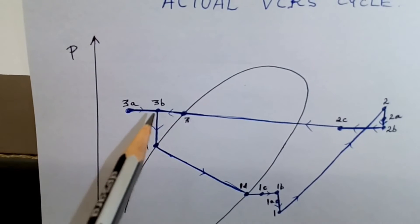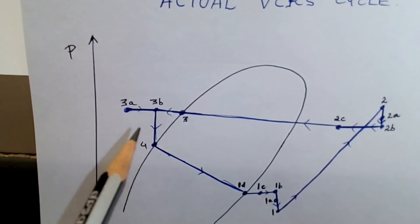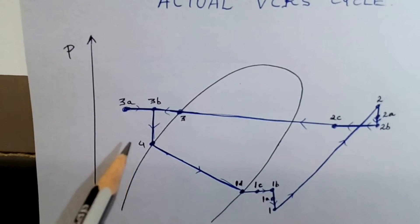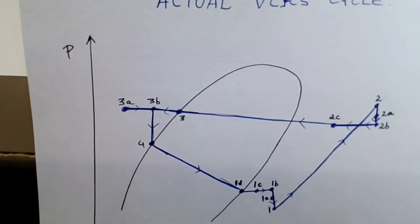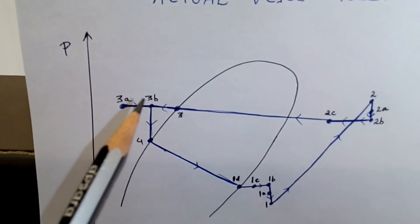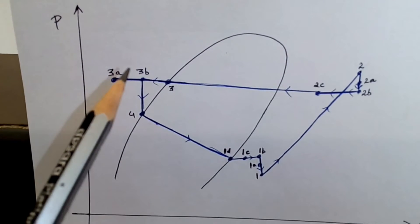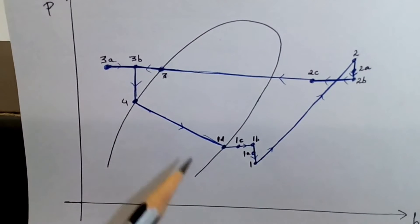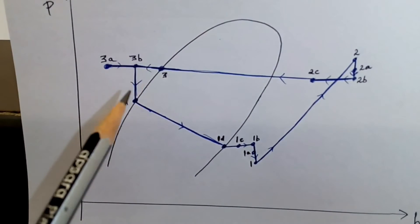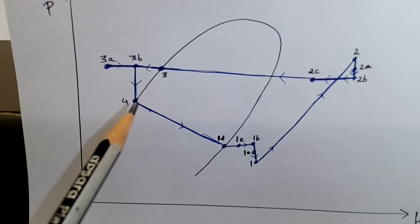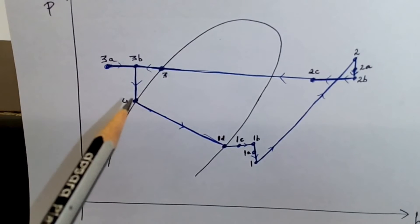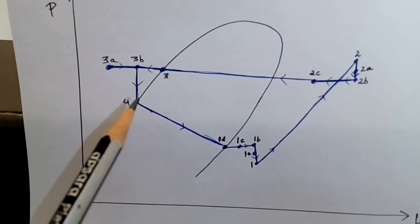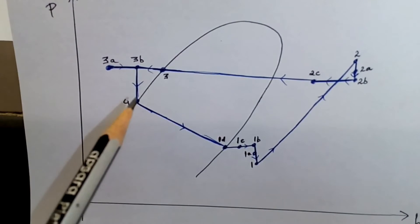From 3b to 4 is the expansion process in the expansion device. It is a constant-enthalpy process, so enthalpy h is constant while pressure drops. We get point 4, which lies on the saturated liquid line.